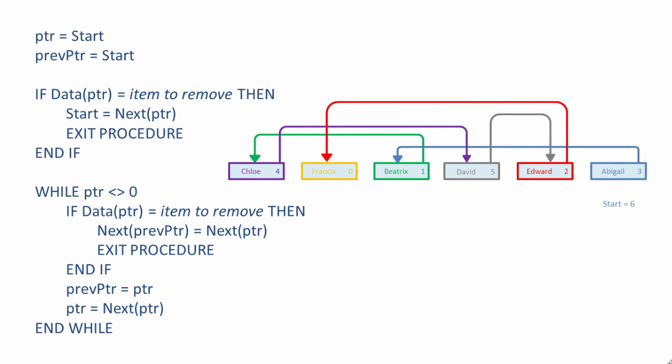Let's take a look at the pseudocode that will do this job. It's an enhancement of the code to traverse a list or to search for an item in the list. We begin by assigning the start value to PTR — in this case, PTR will be 6. We then ask if this data item, data item 6, is the one we want to get rid of. If we're removing the start item, it's a special case. We set the new start value to be the pointer of the previous starting item.